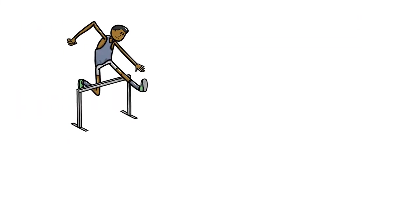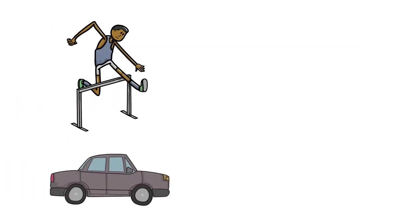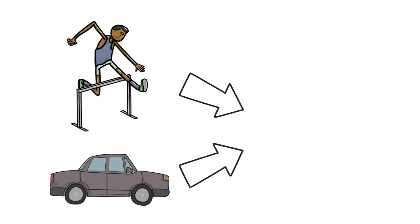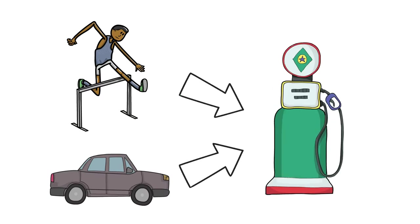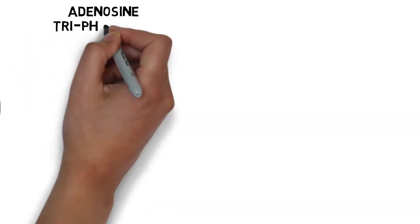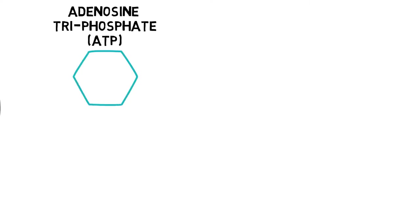Our bodies are a bit like cars. In order to move and function we need fuel to provide energy. Stored energy in our bodies is called adenosine triphosphate, or ATP for short, and is the only energy currency our bodies can use. It contains a high energy bond made up of adenosine and three phosphate molecules.